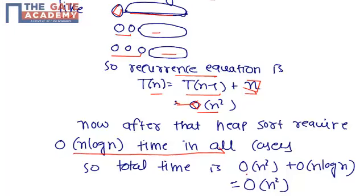So total time is O(n²) plus O(n log n), so it is almost equal to O(n²).